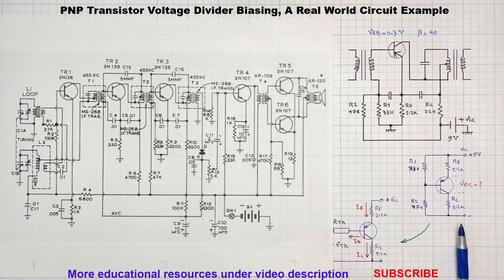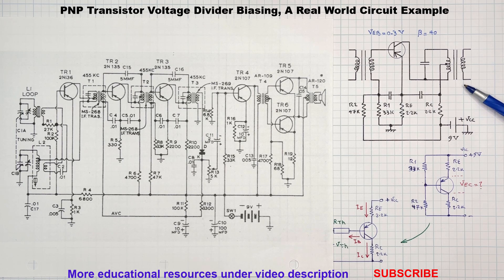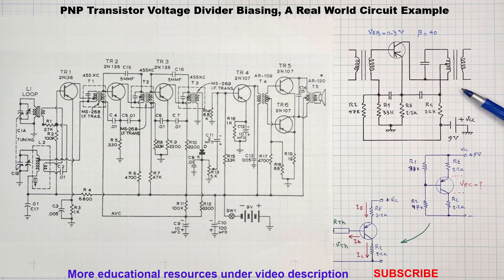We can simplify and redraw this amplifier as the following. In DC analysis of transistor amplifiers, capacitors are treated as open circuits and inductors and transformers as a short circuit. This simplification allows us to focus on the DC bias conditions of the circuit, ignoring the influence of AC signals.